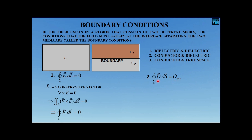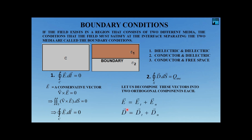We shall decompose the field vectors D and E into two orthogonal components: a tangential component (denoted T) and a normal component (denoted N). So each field vector is decomposed into a tangential and a normal component.